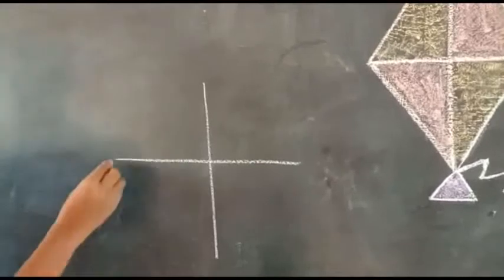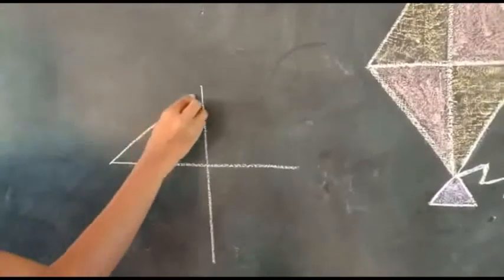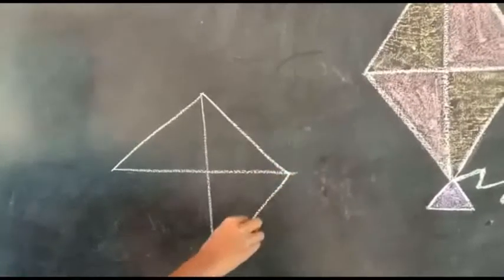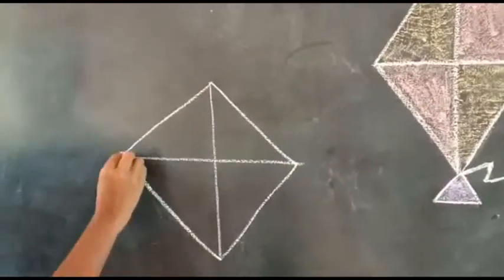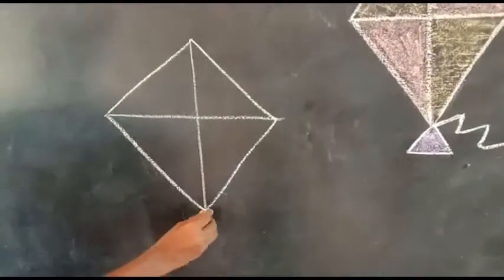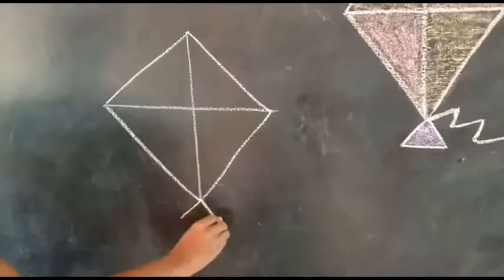Connect two slanting lines at the top and bottom. Next, draw two slanting lines joined with the sleeping line.